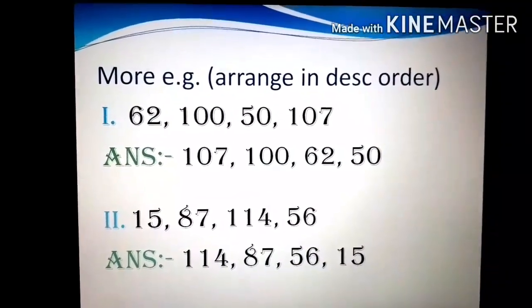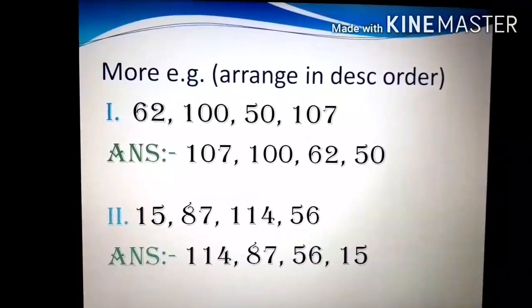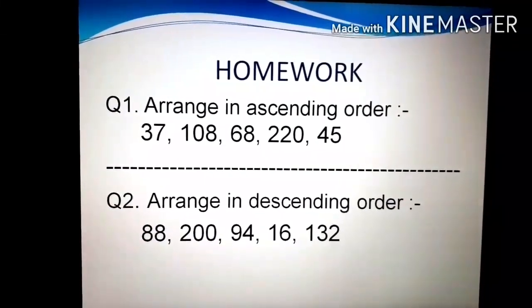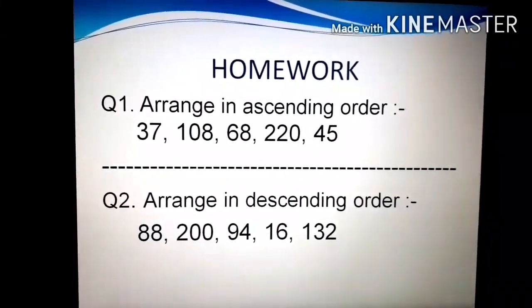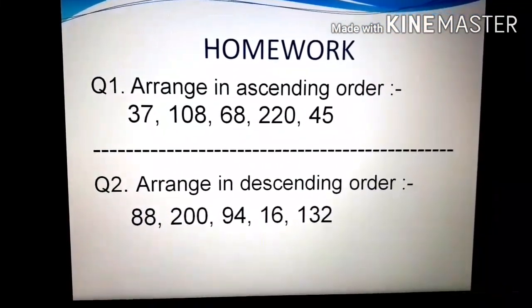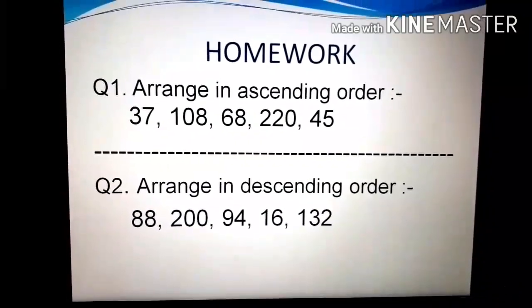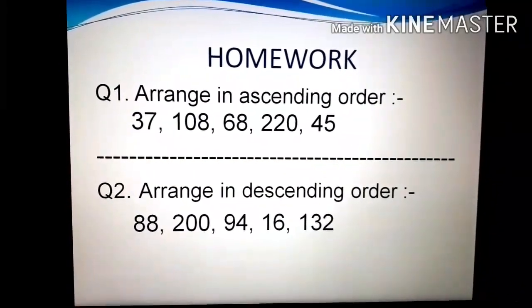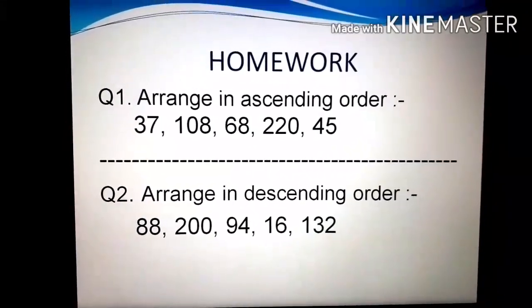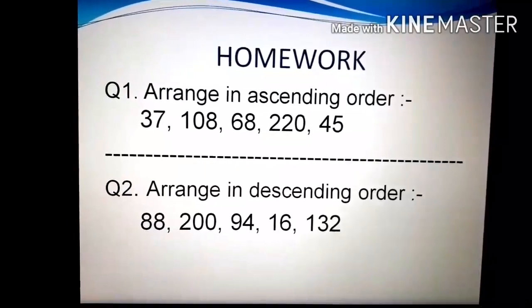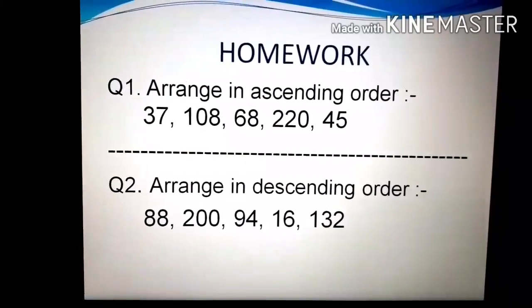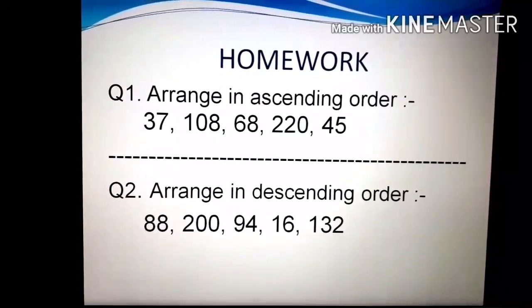Okay children, I hope you all have understood ascending and descending order. Now I am going to give you homework. The first question is arrange in ascending order — you have to arrange the numbers in ascending order, which means smallest to biggest number. The second question is arrange in descending order — these numbers you have to arrange in descending order, which means from biggest to smallest number. Okay children? Thank you.